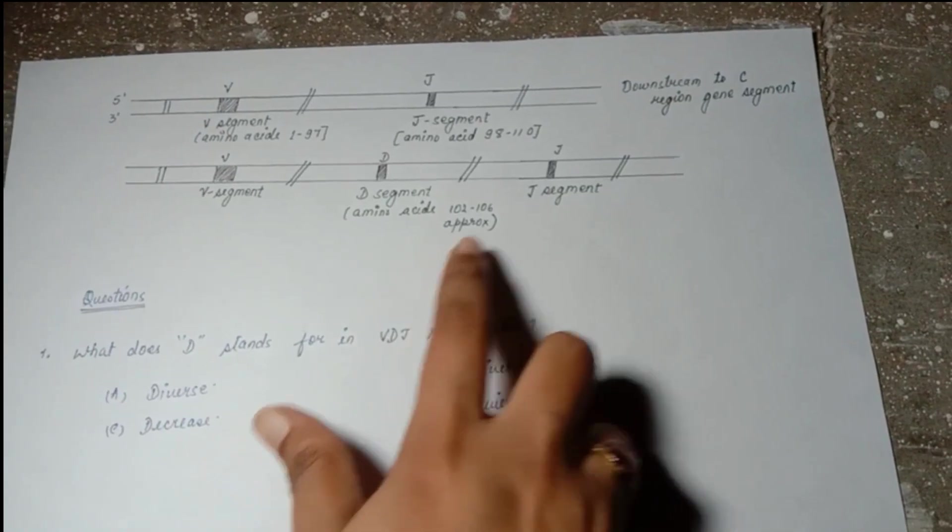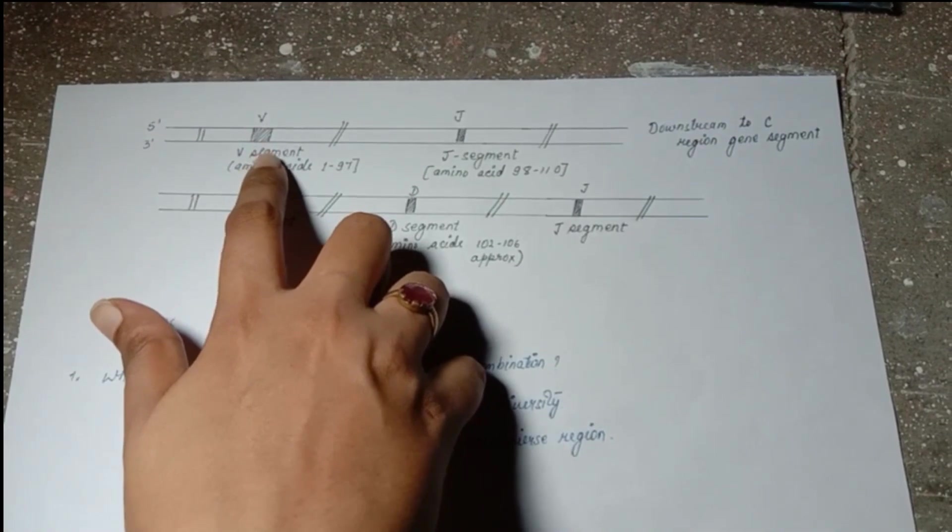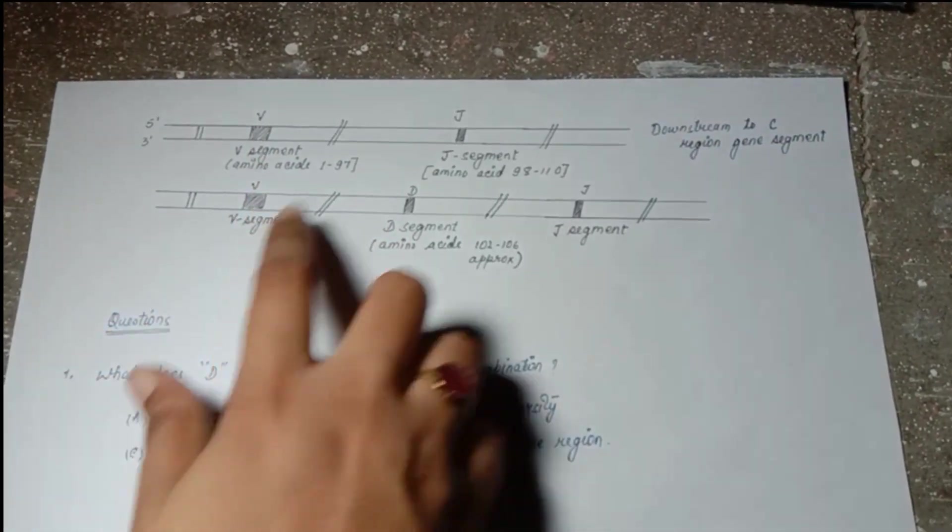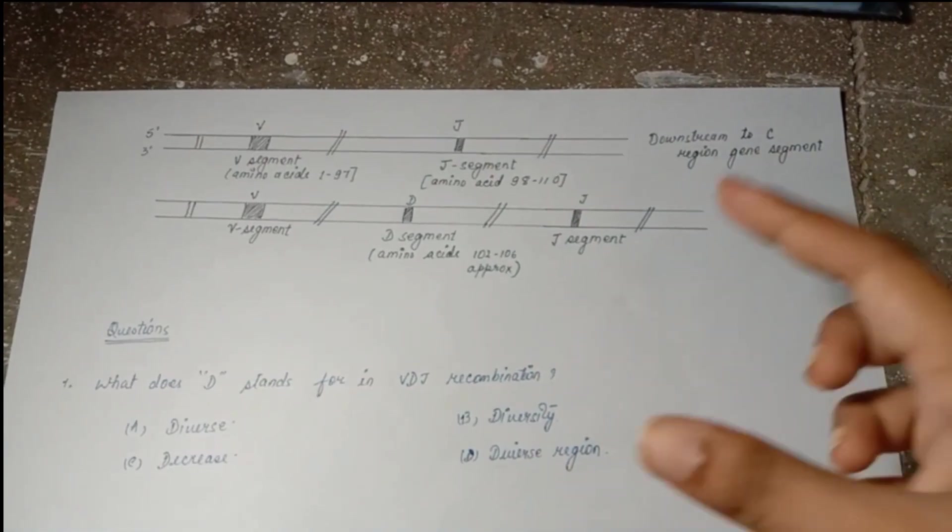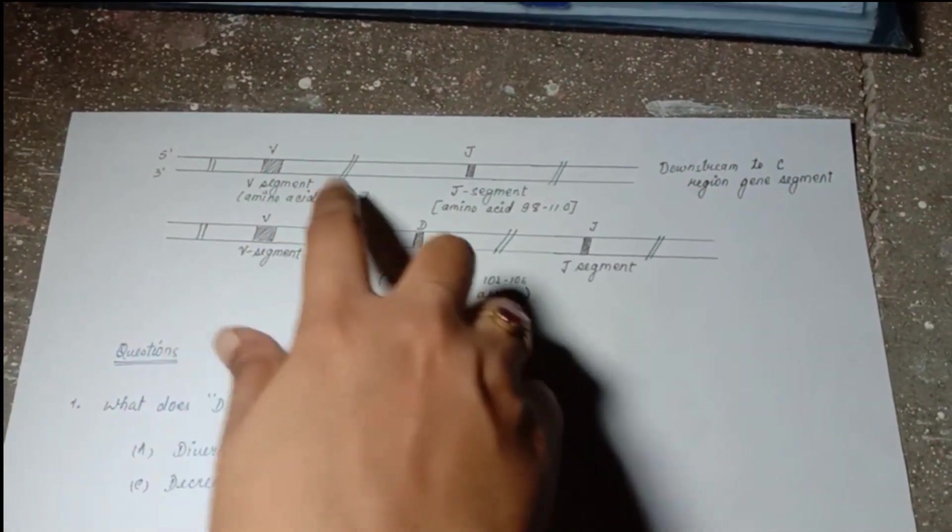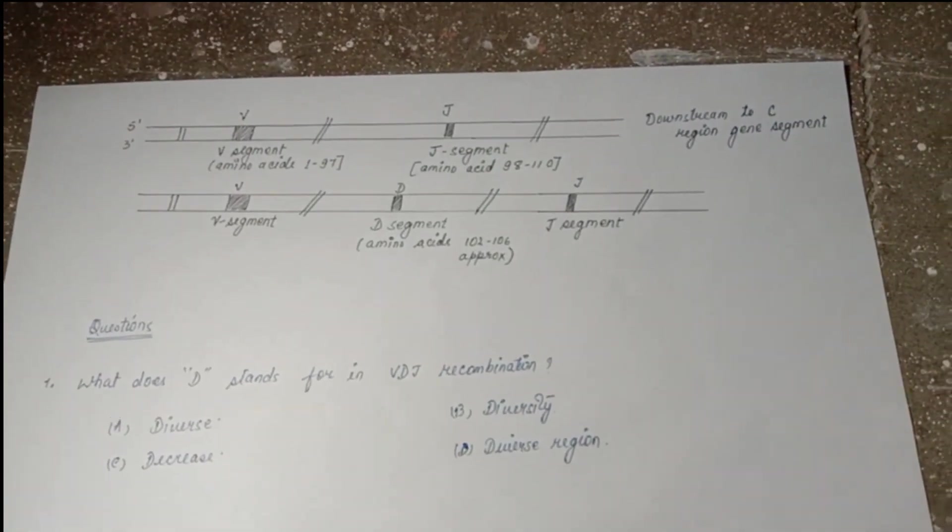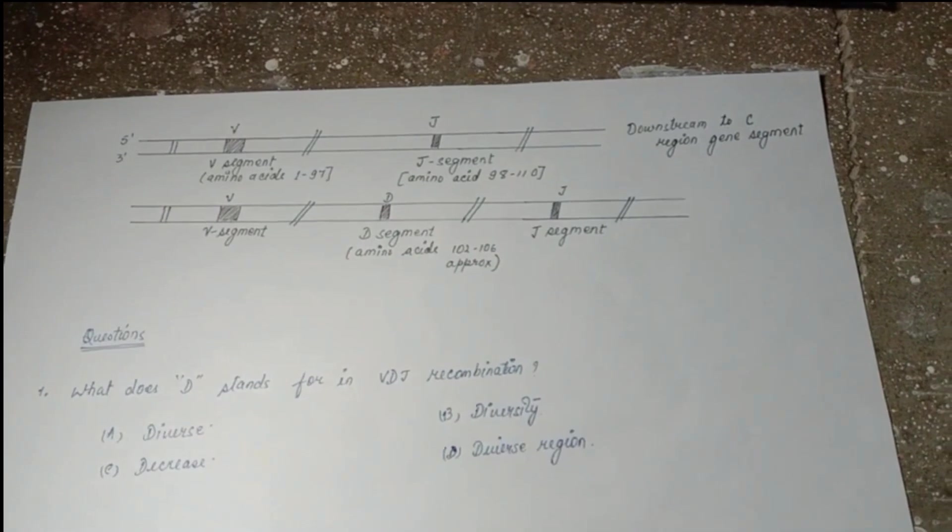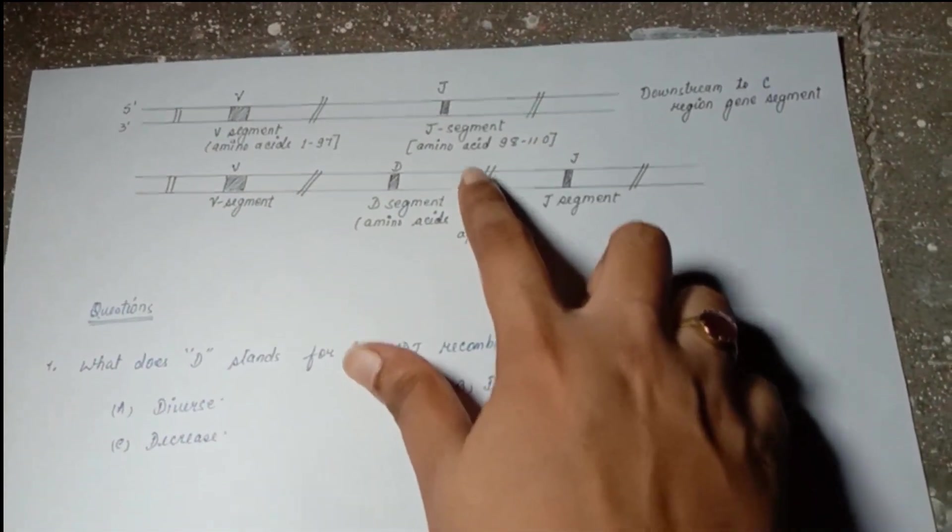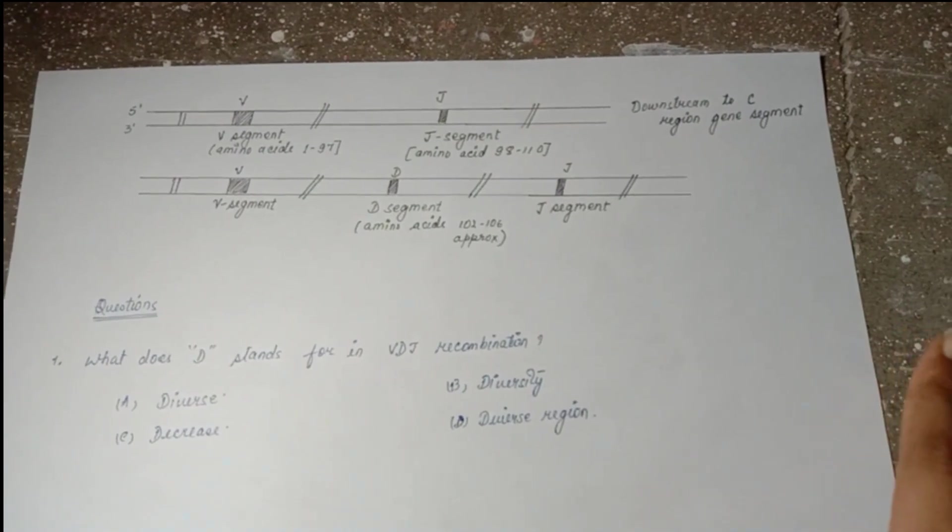This recombination: V segment will form mRNA and then protein. J segment will form mRNA and protein. Various other segments like J1, J2, V1, V2, V3, a lot many combinations. About D segment, they can also make a lot. For J segment, it's two or some constant number is there.